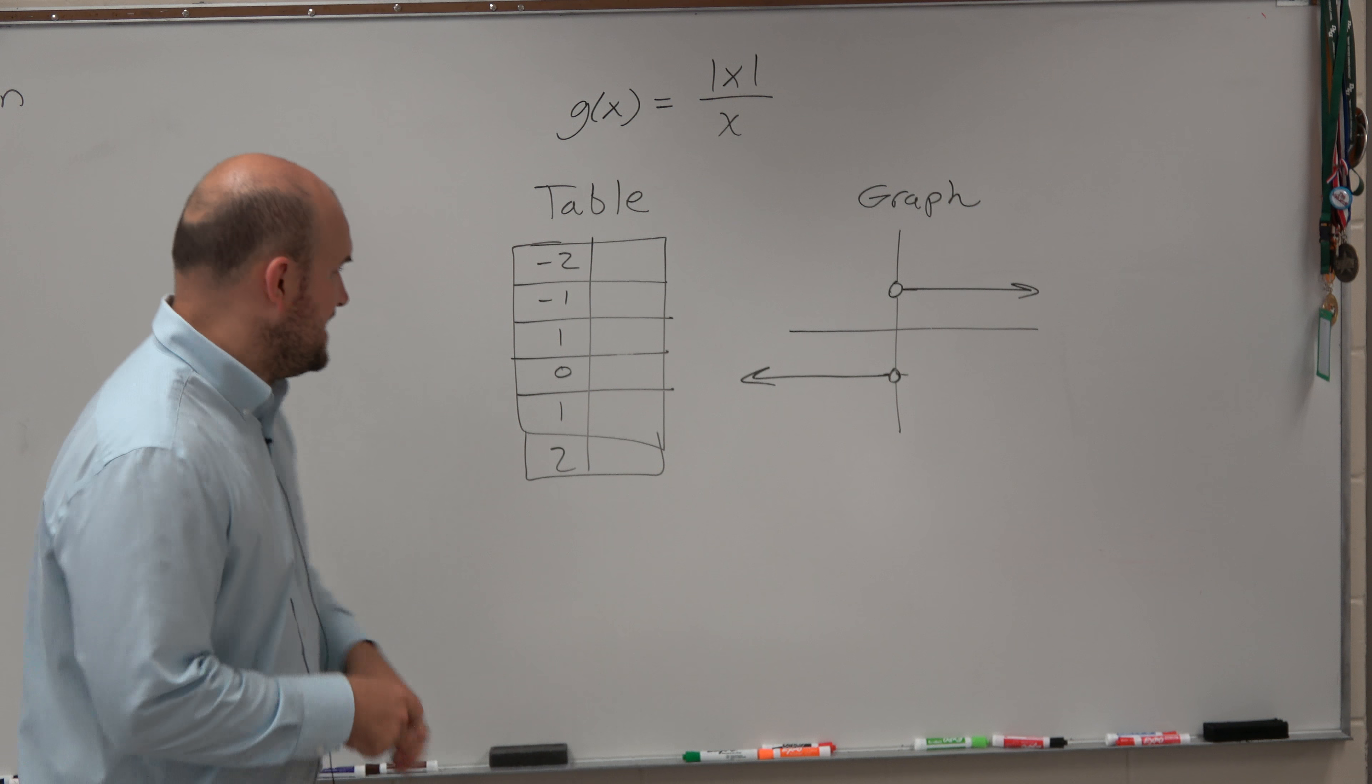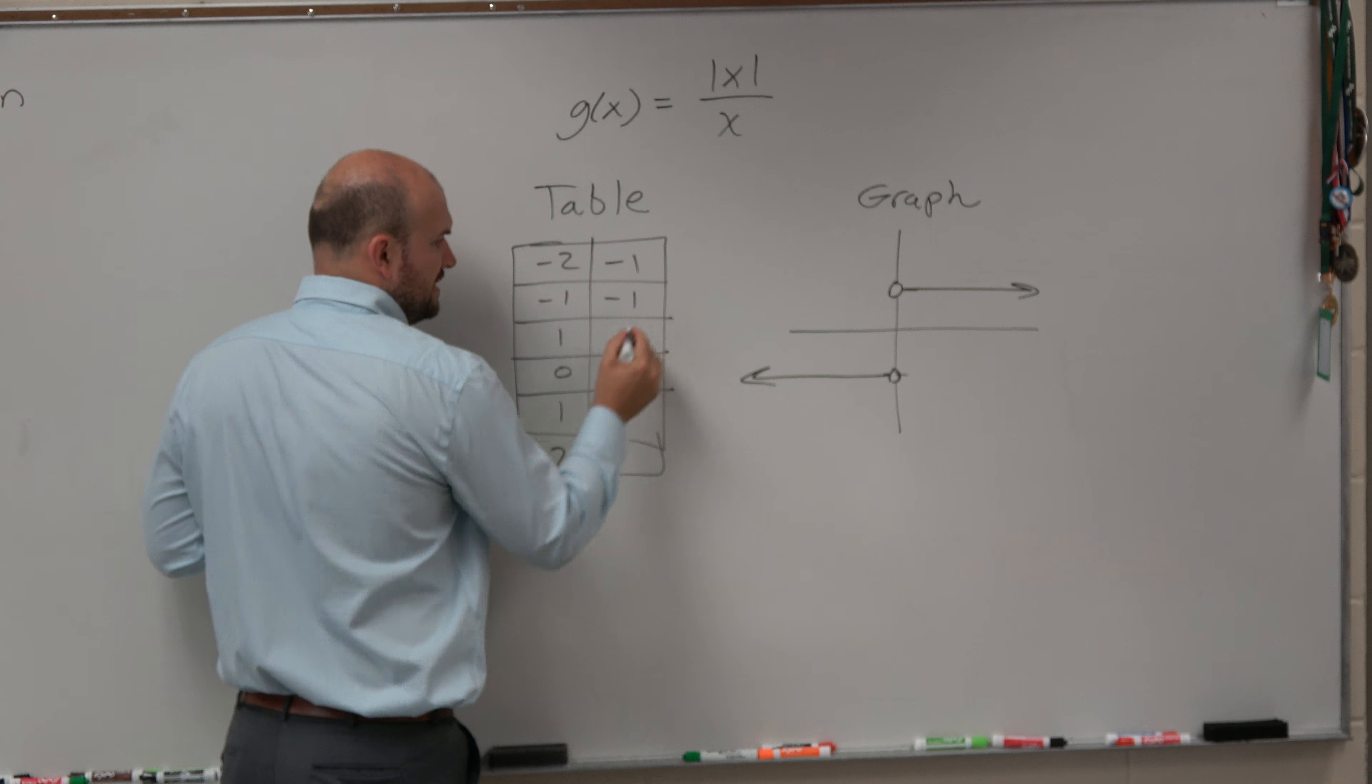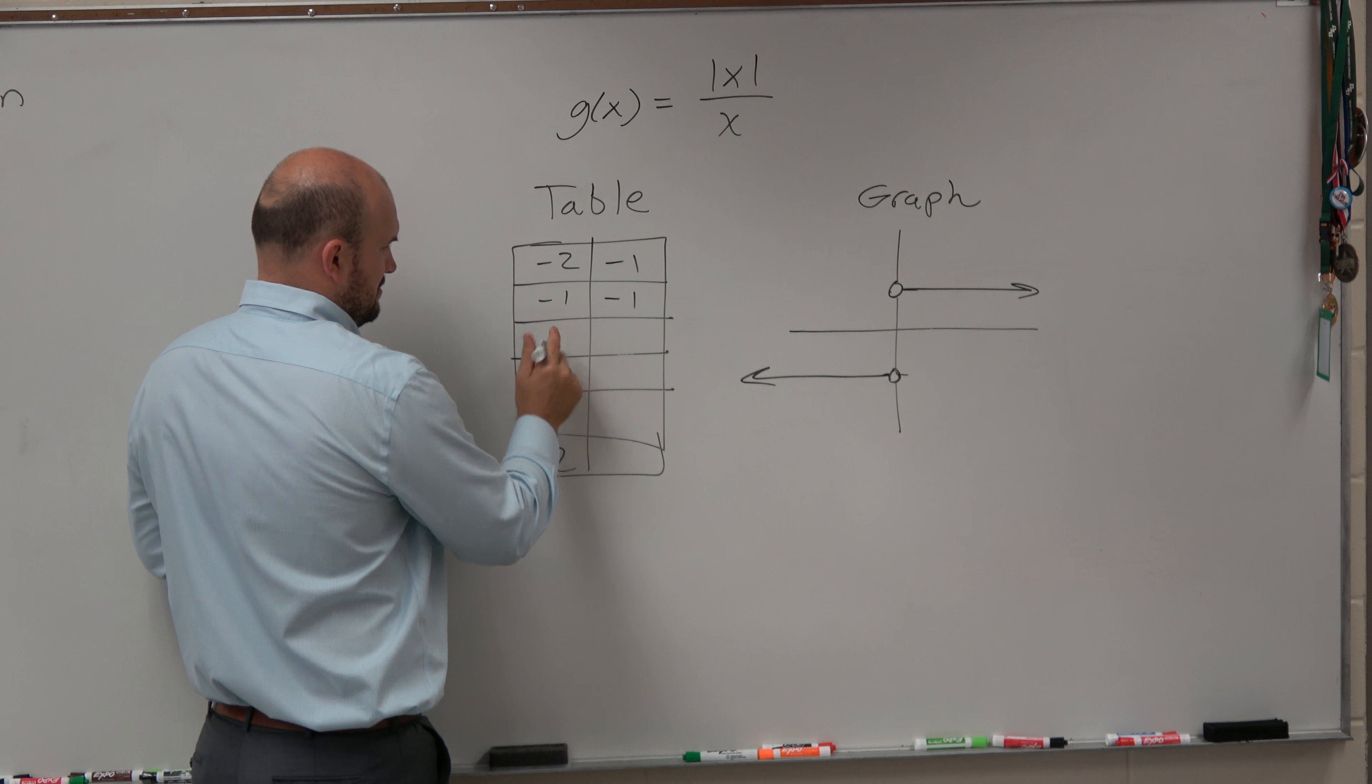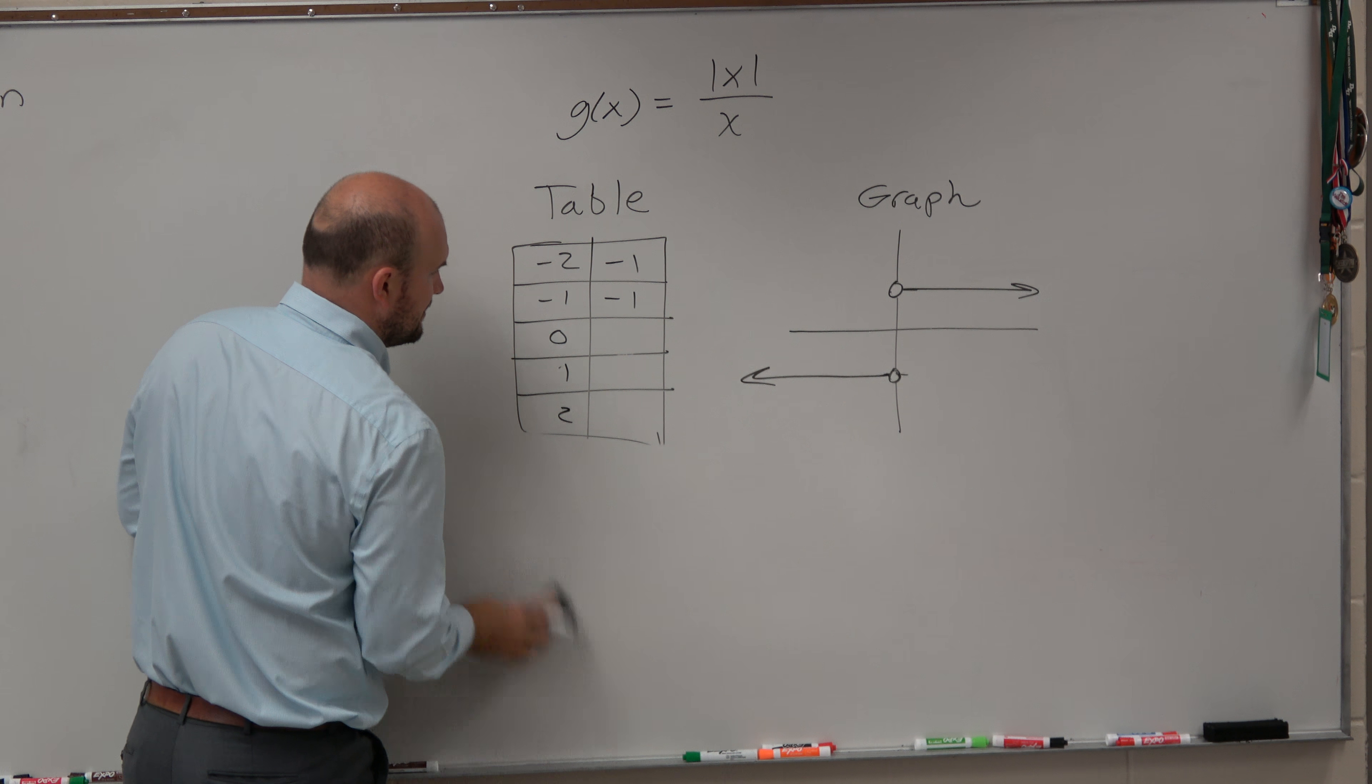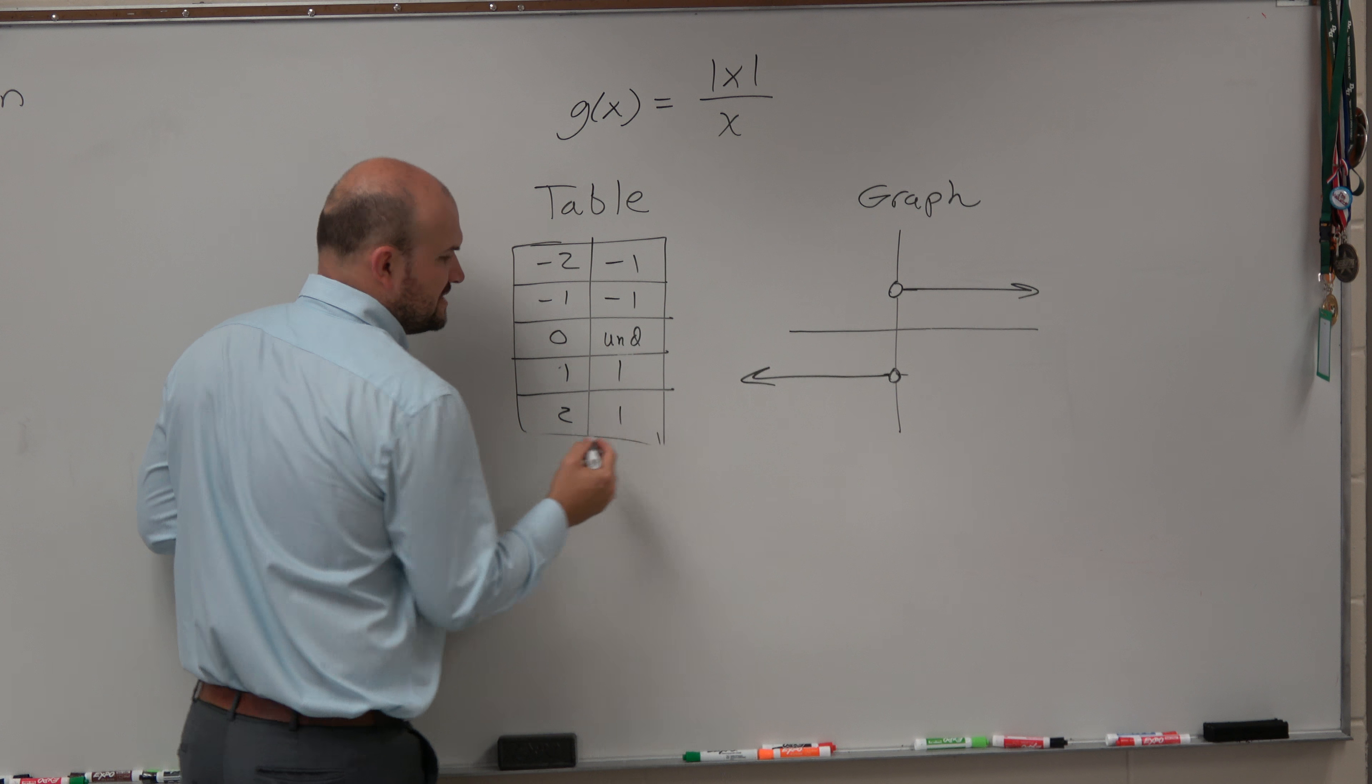However, when we look at the table, at negative 2, it's equal to negative 1. At negative 1, it's equal to negative 1. At 0, it's undefined. At 1, it's equal to 1. And at 2 is equal to 1.